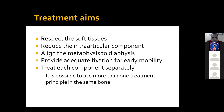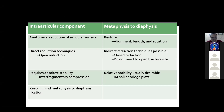In such injuries, when we have an articular and an extra-articular component, it is possible to use more than one treatment principle in the same bone. If we have more than one component — an intra-articular and extra-articular component — we should know that the articular component requires an anatomical reduction of the articular surfaces. This anatomical reduction requires direct reduction techniques, which means open reduction. This articular component requires absolute stability, which means inter-fragmentary compression. All the time while we are treating the intra-articular component, we should keep in mind that we still have to fix the metaphysis to the diaphysis.